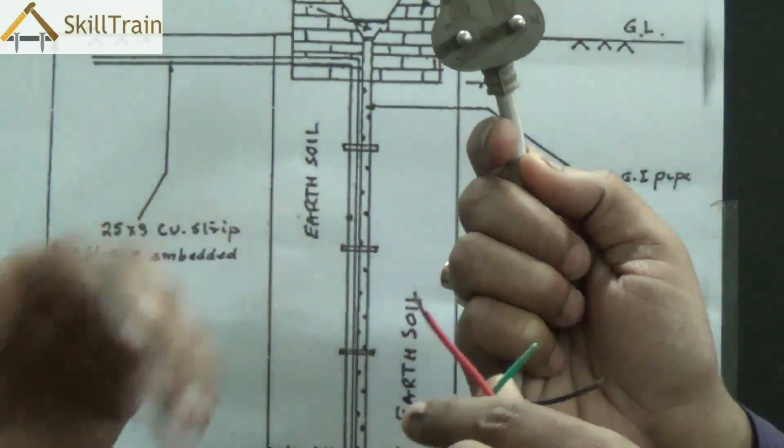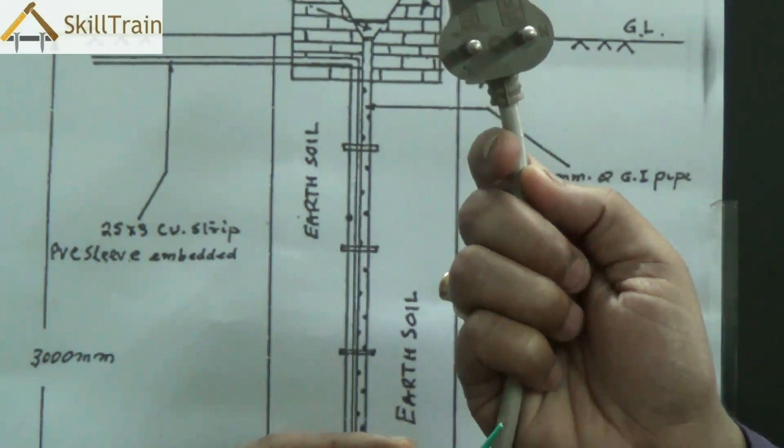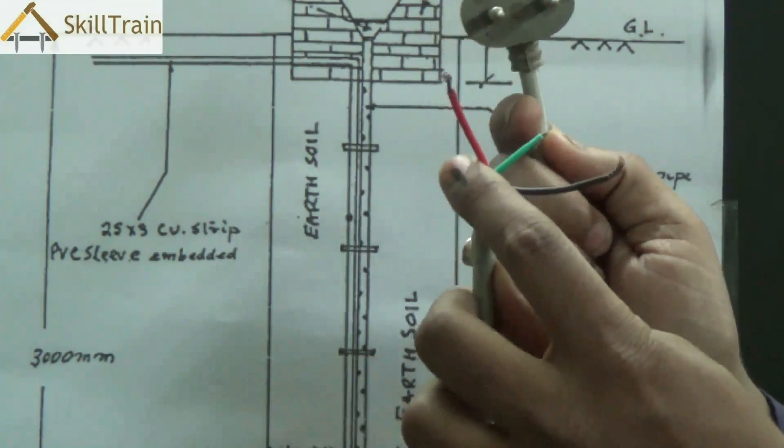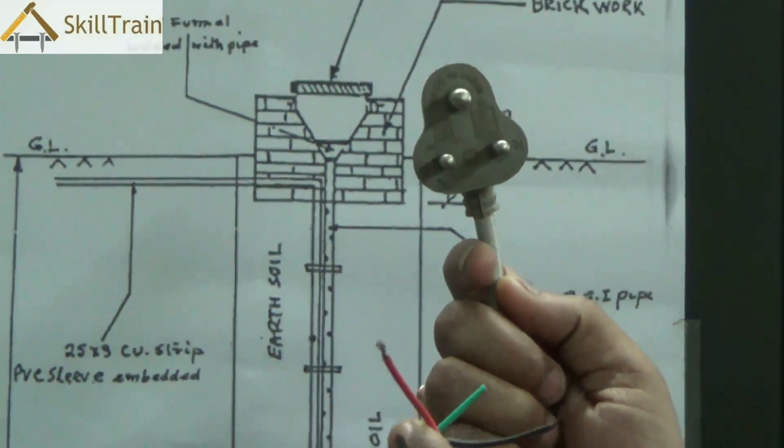So this way what happens? Because of the earthing present in any equipment, the excess or leakage current is directed to the soil thereby keeping the equipment safe and keeping the human body also safe.